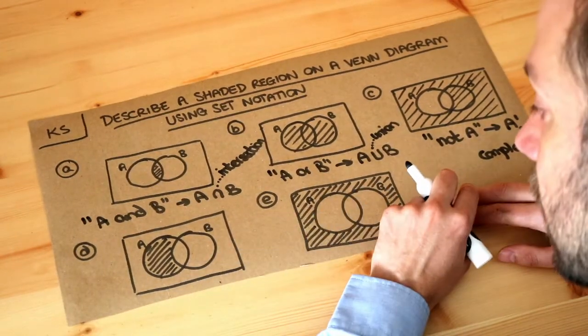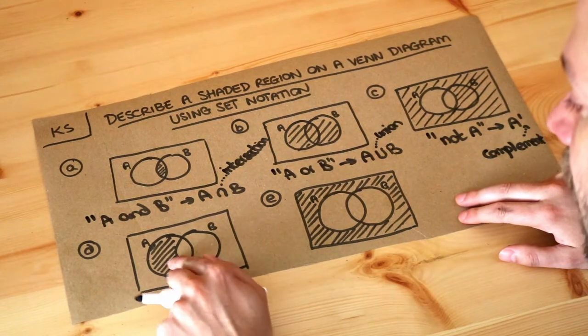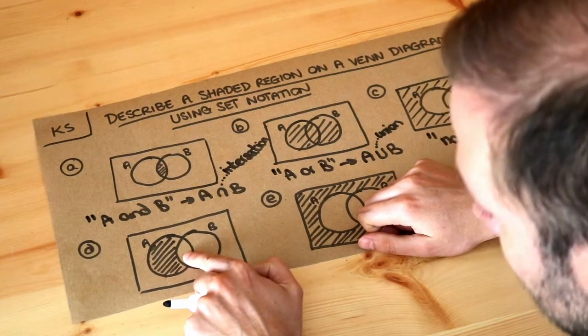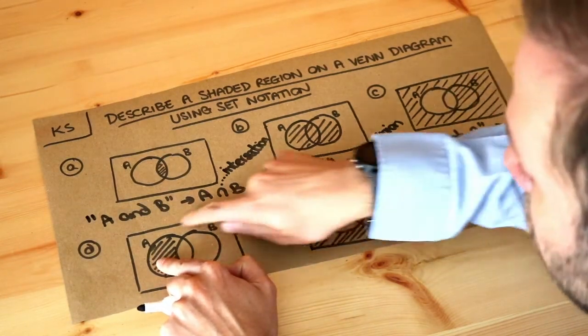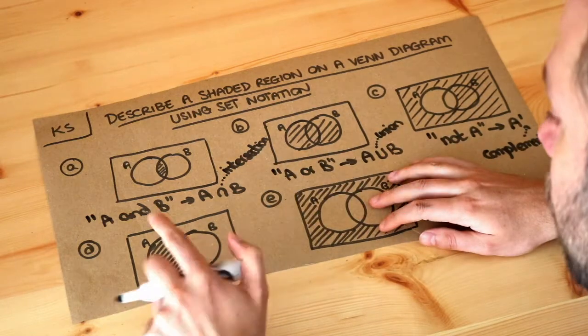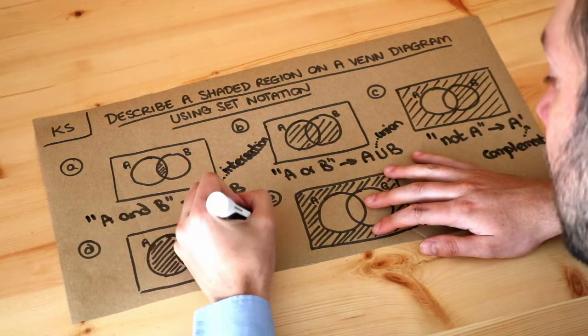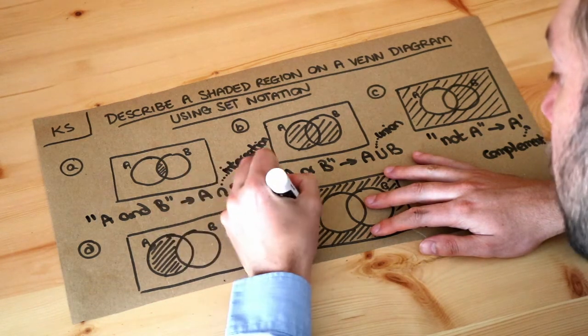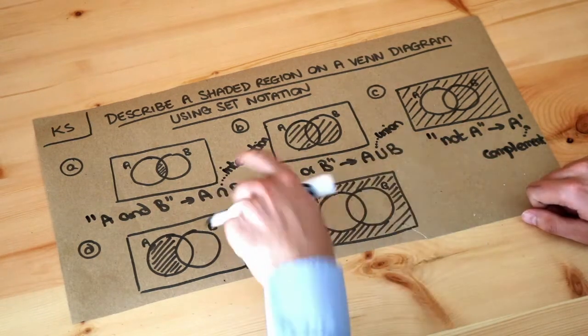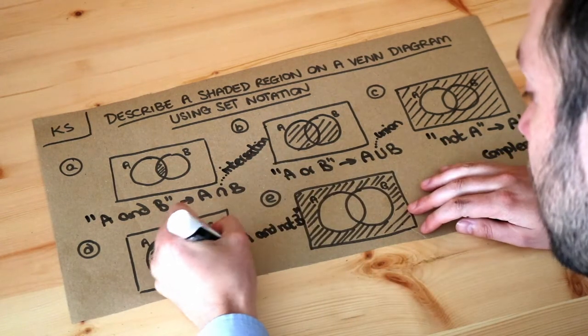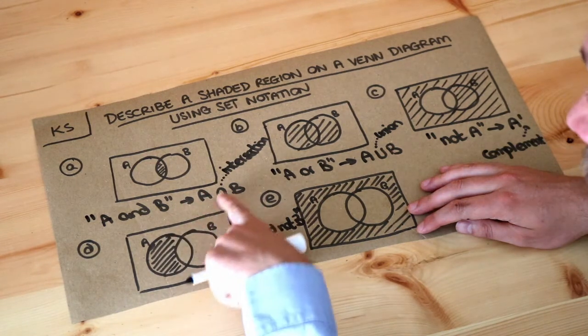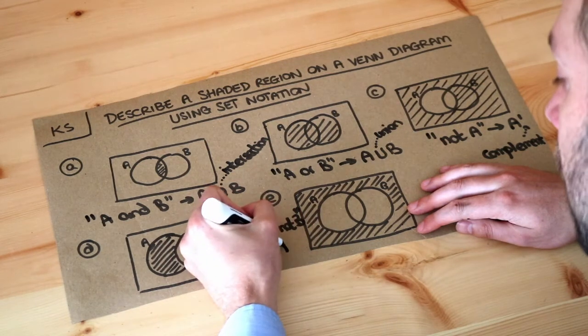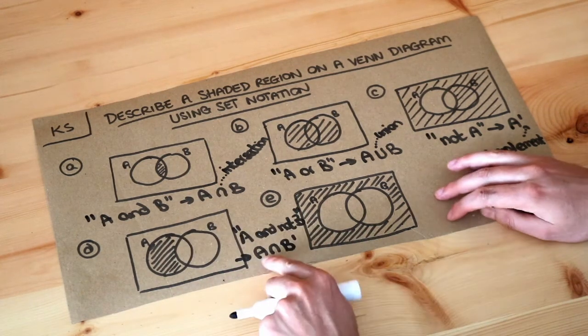What about D? Now this seems to be the region which is in A but it's not in the B circle, because this region here is also in A but we only want the part of A that's not in circle B. So we want A and not in B, and the way we can write that is A intersection B prime. Remember the intersection symbol means and, so it's A and not B.